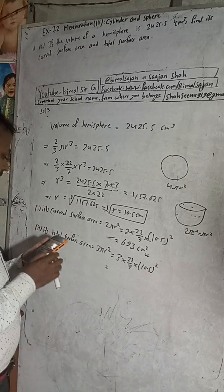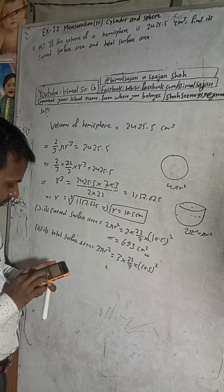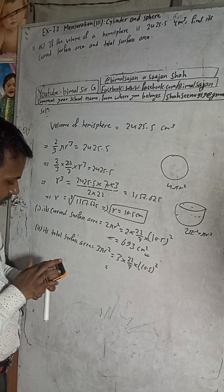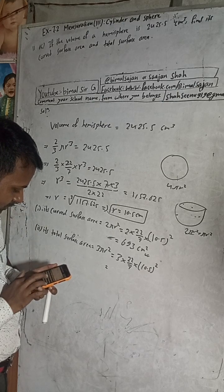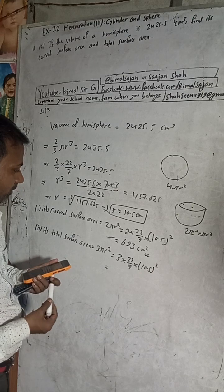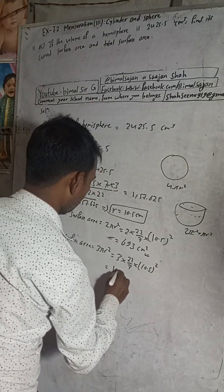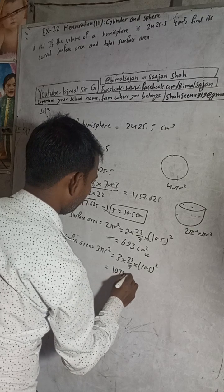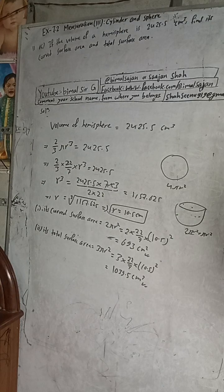This will be 1039.5 cm². So this is the required solution of this question: curved surface area is 693 cm² and total surface area is 1039.5 cm².